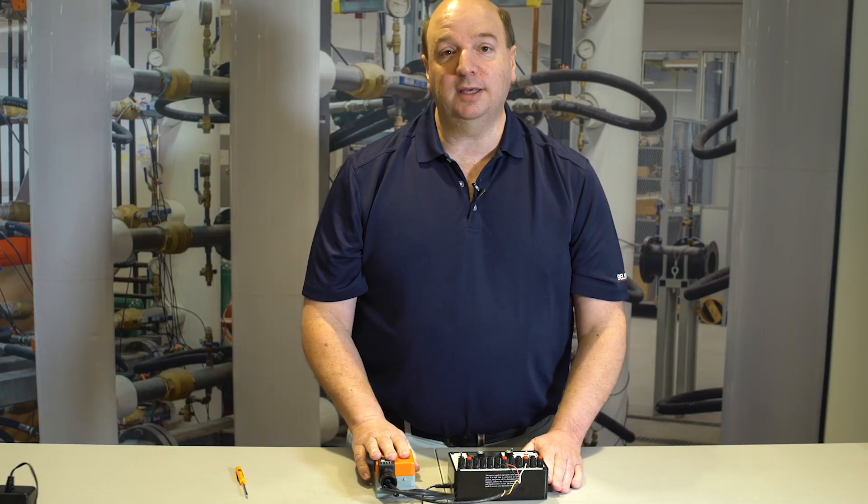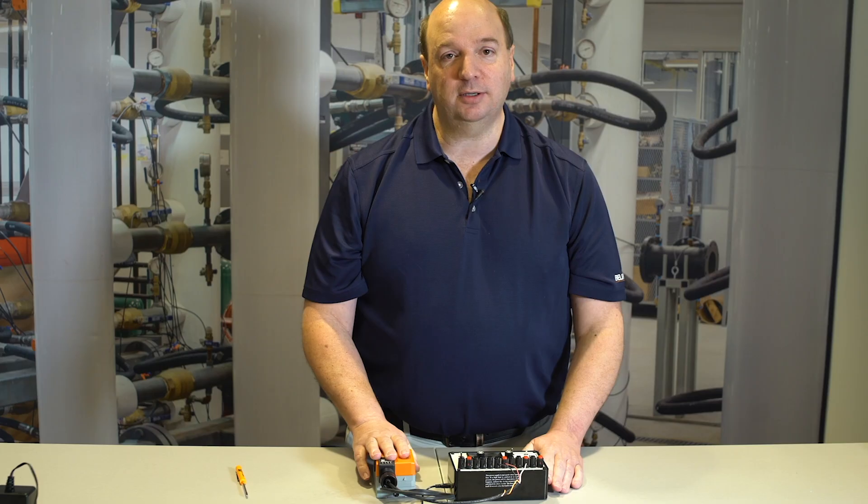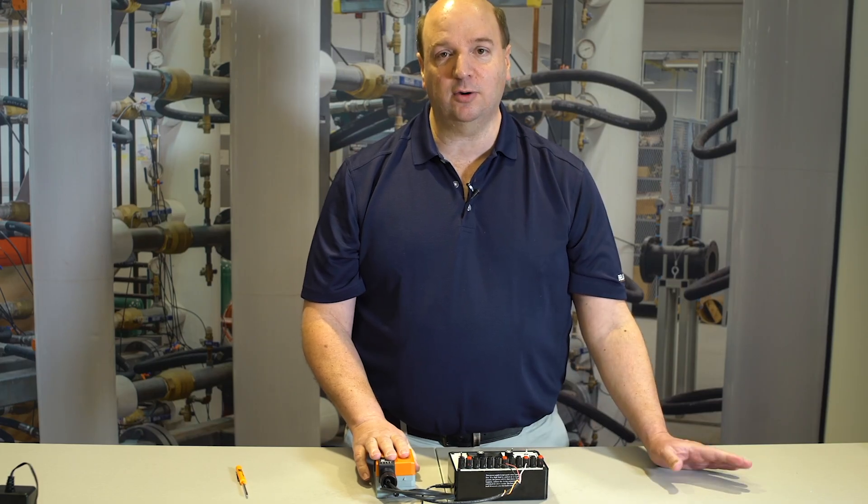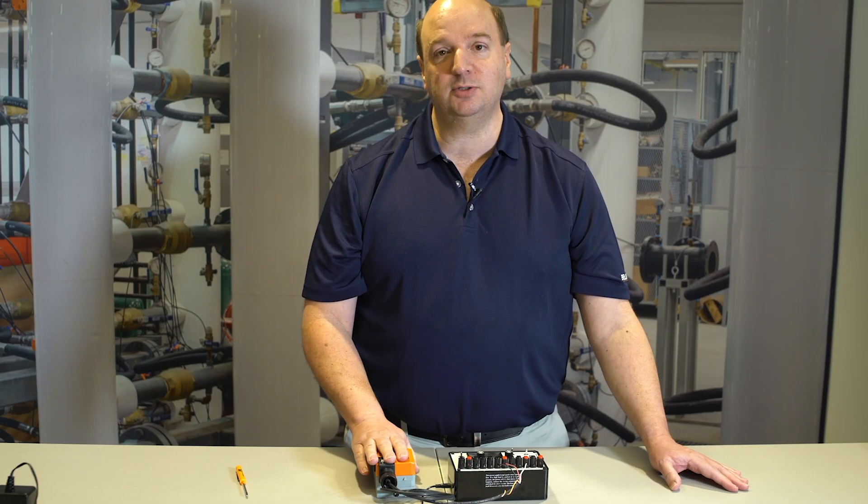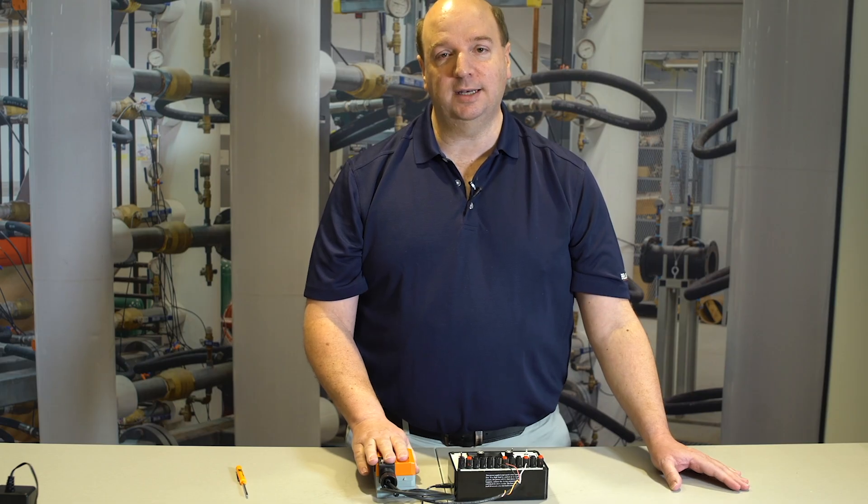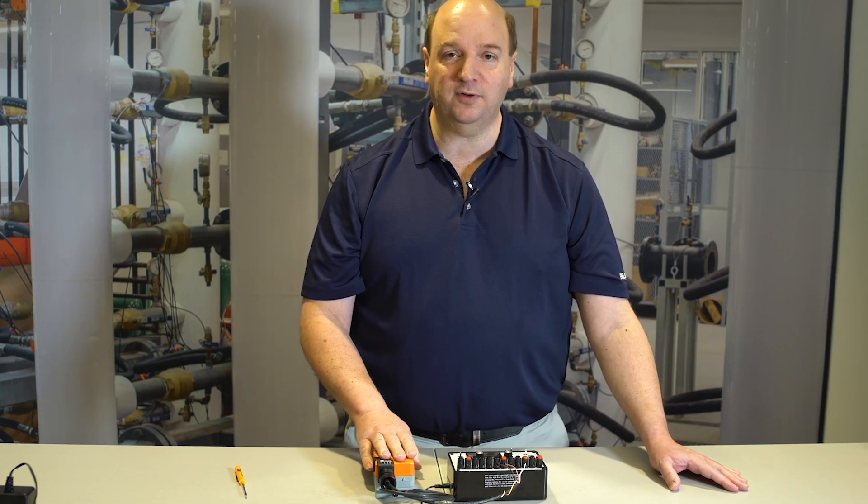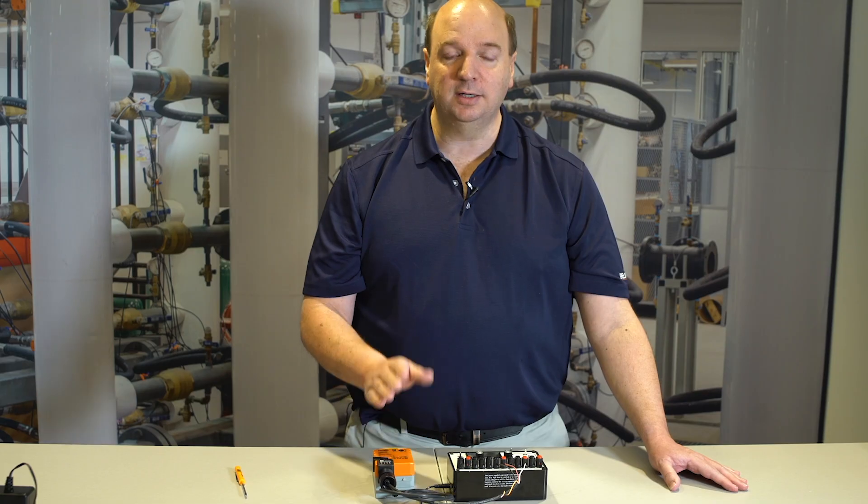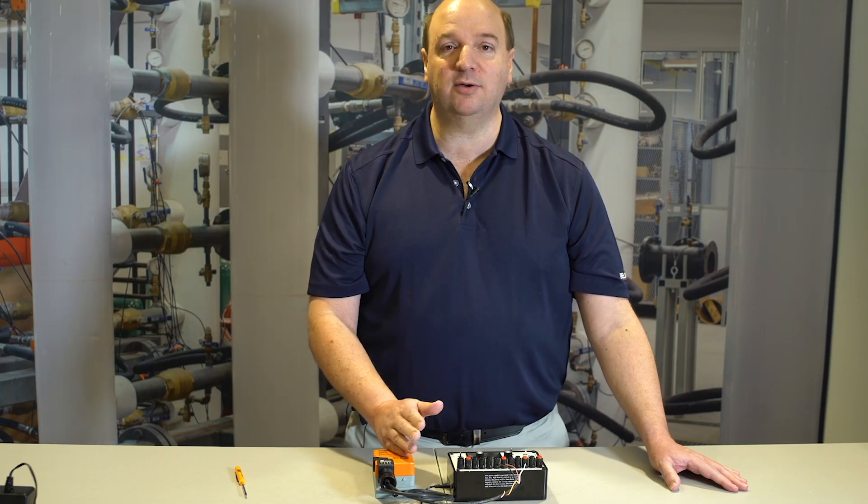Now we're done wiring the fail-in-place actuator, and we will wire the fail-safe actuator or spring return actuator. The difference between fail-in-place and spring return is fail-in-place will fail right where it is. If power were to fail, it's just going to stay right where it is.